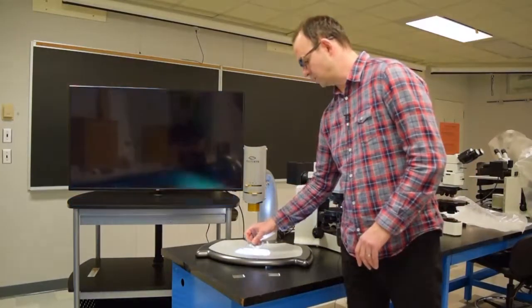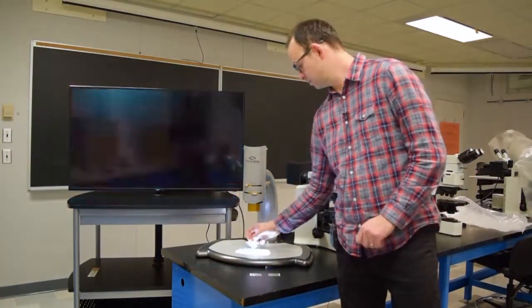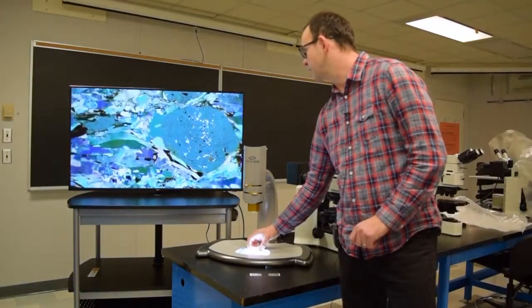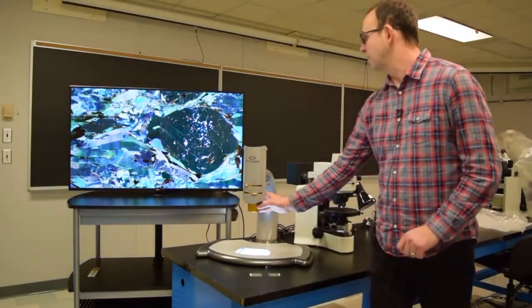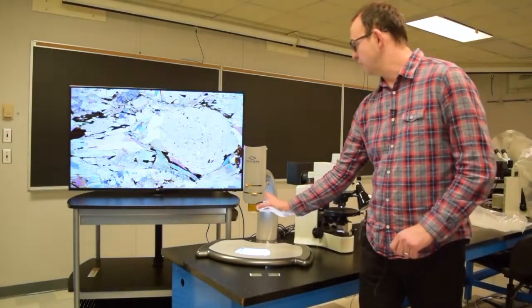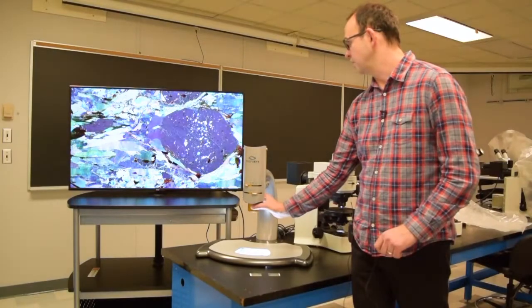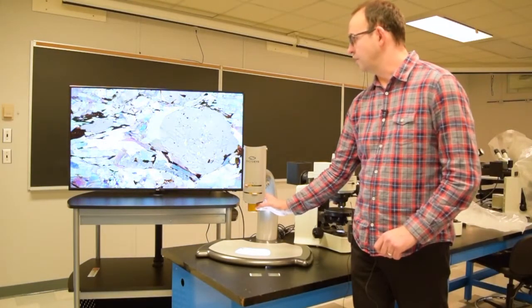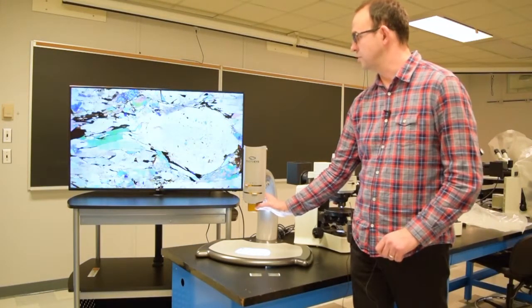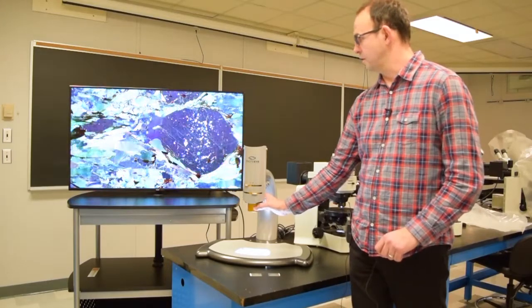We also have a metamorphic rock, in this case a garnet schist. The garnet is the large grain that turns from black to white to pale green. The very vibrant colored grains that turn into blues and reds are micas.